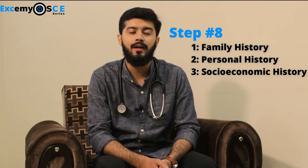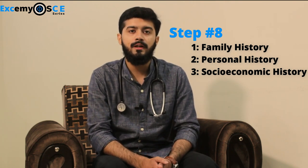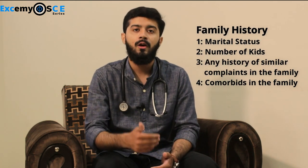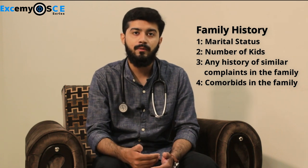After past drug history, we come to family history, personal history, and socio-economic history. In family history, we ask whether the patient is married or unmarried, how many children they have, and whether any family members have diseases. We ask siblings and parents about conditions such as hypertension, diabetes, and cancer, as family history can help with differential diagnosis of the presenting complaint.